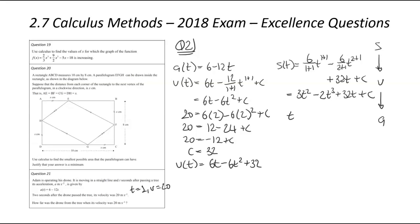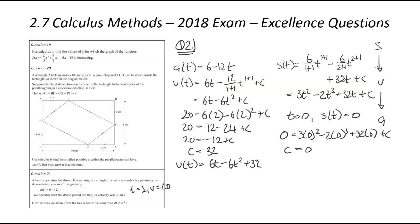At this step, a lot of us panic about how to find c. But in these types of kinematics questions, we know that when zero time has passed there has been no movement — you can't travel anywhere if no time has passed. So we substitute t equals 0 and displacement equals 0: zero equals 3 times 0 squared minus 2 times 0 cubed plus 32 times 0 plus c, giving c equals zero. That comes up quite a bit for displacement questions.